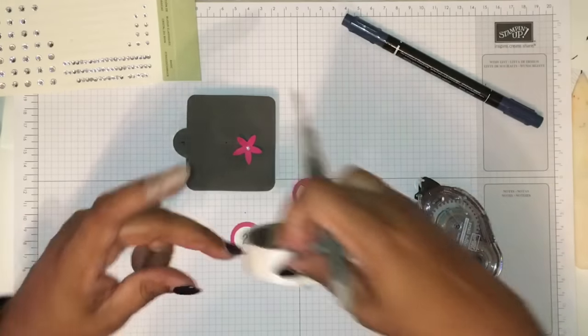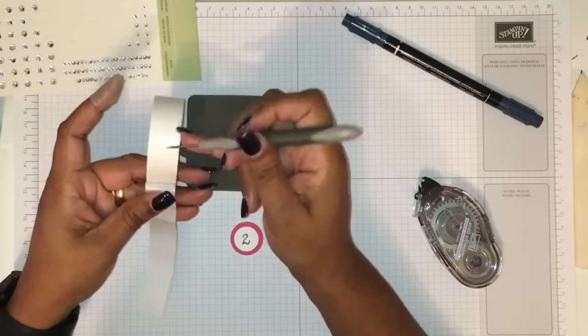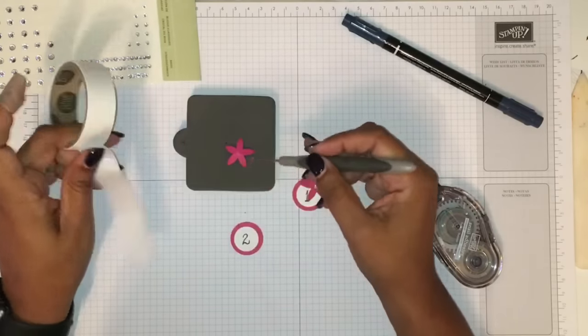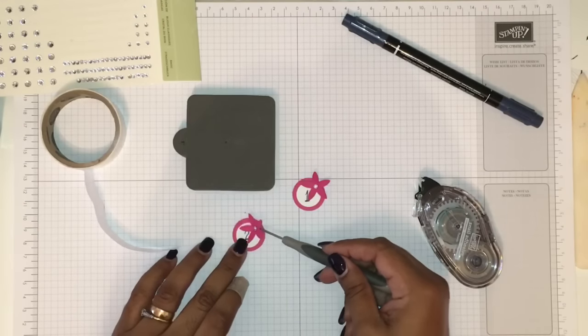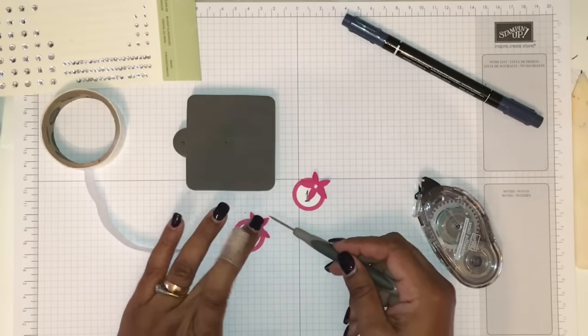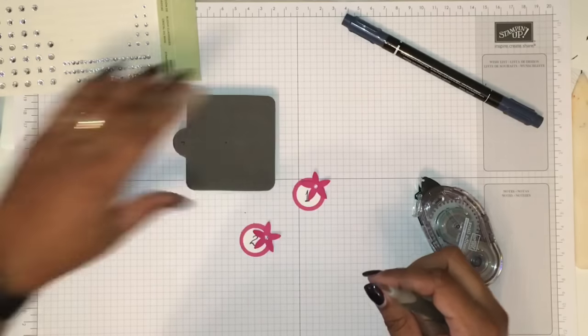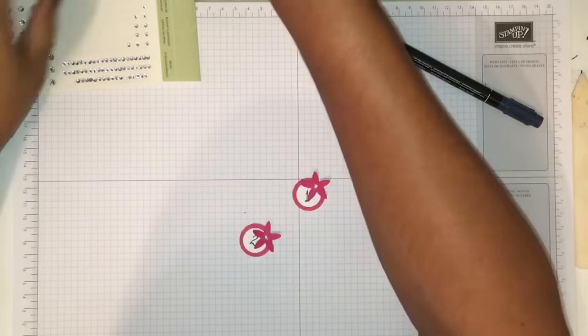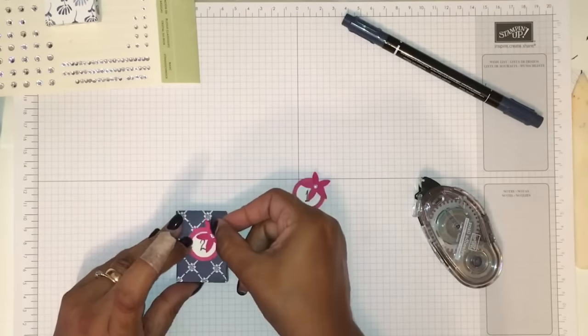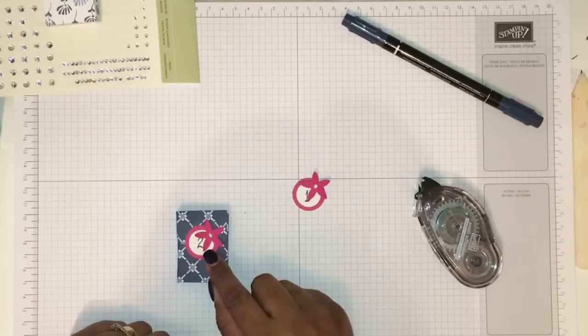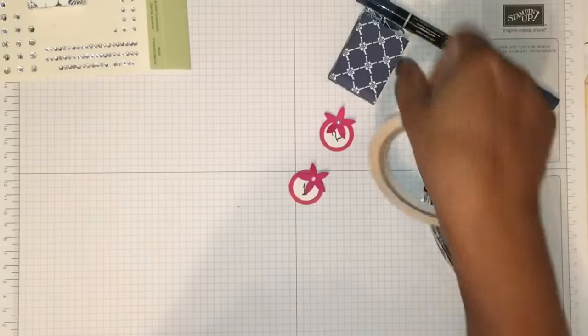I used my glue dots to put this on back here. And here we are. So I have another 23 to make, but that's how it's gonna look when we put our chocolate in place and on our tree.